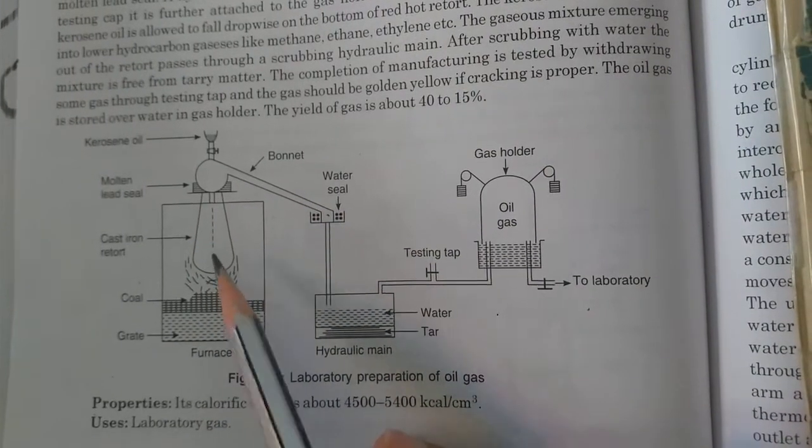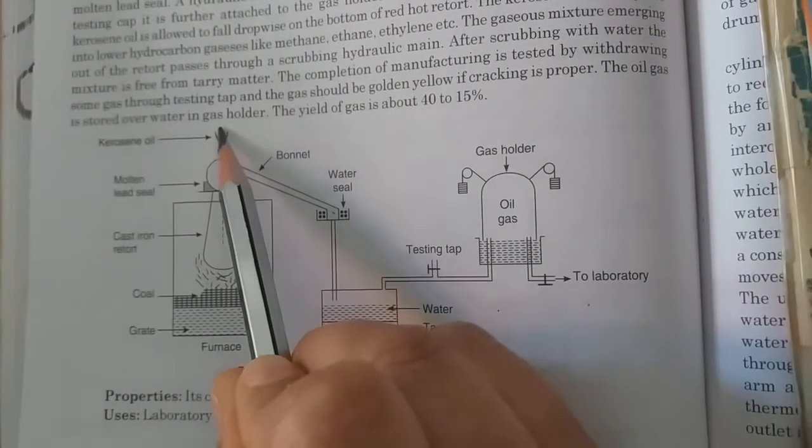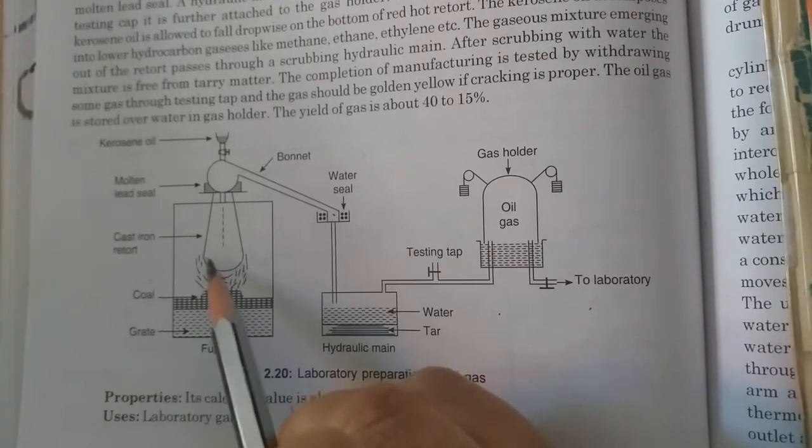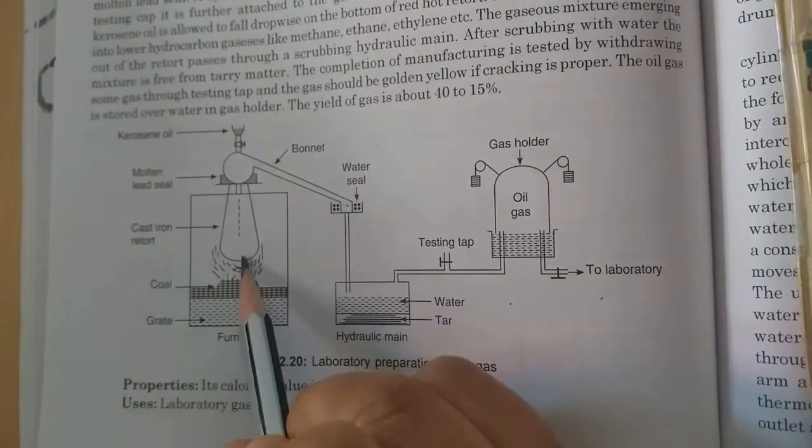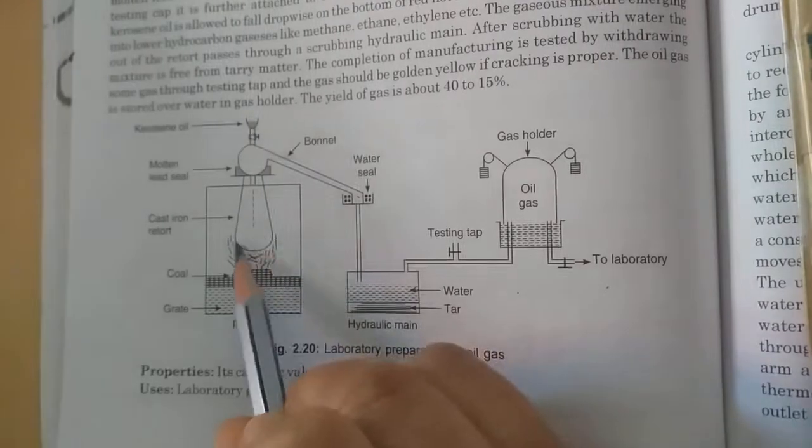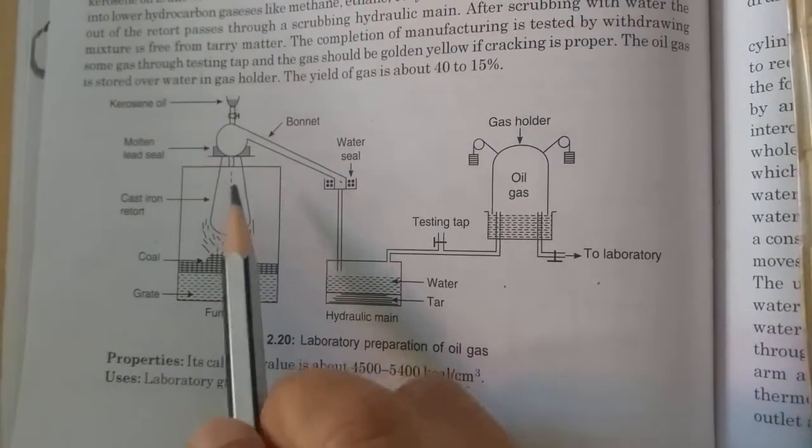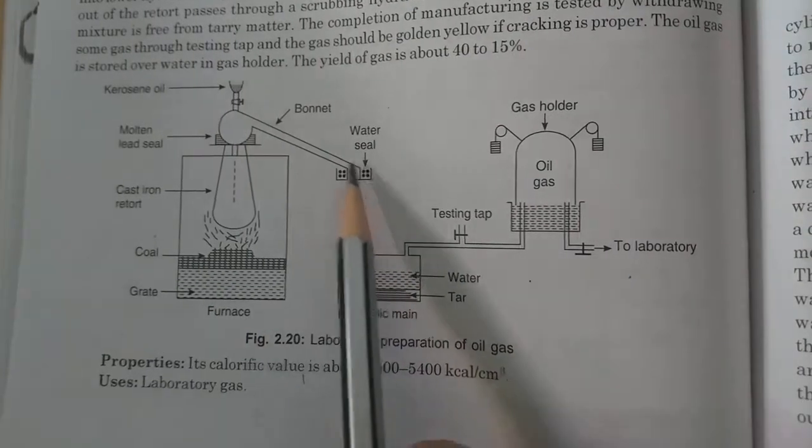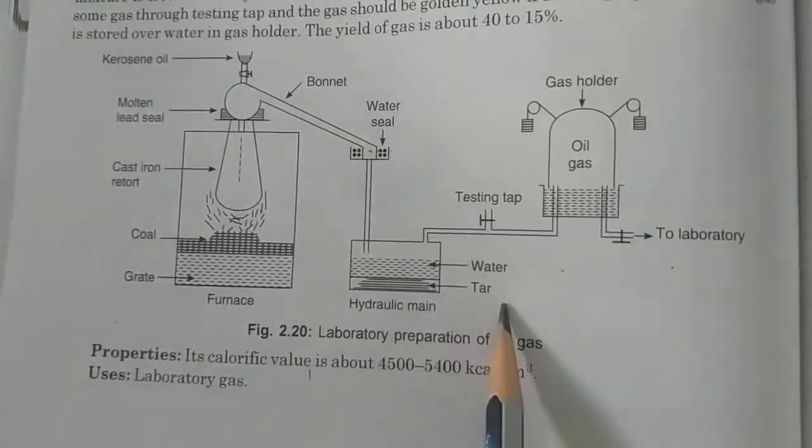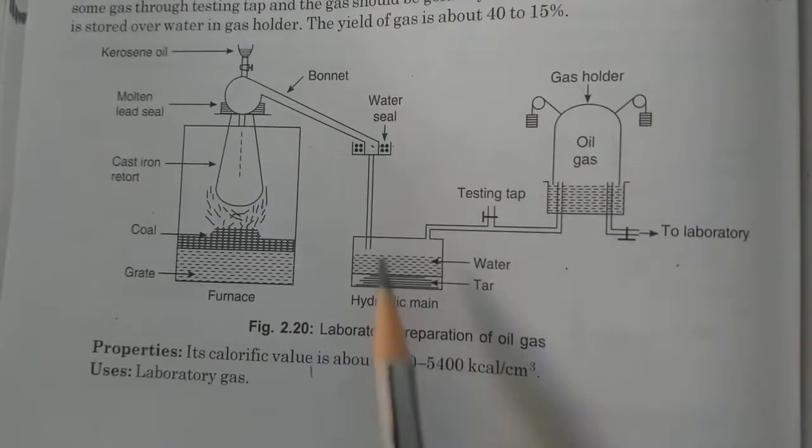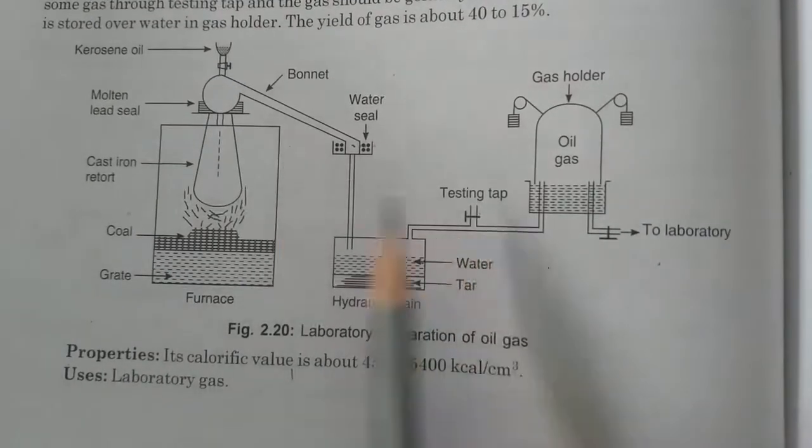This is the figure which shows the manufacturing of oil gas. This is the iron retort, cast iron retort. When it is red hot, kerosene oil drops from the thistle funnel. When kerosene oil drops on the red hot cast iron retort, thermal cracking occurs. After thermal cracking, a mixture of lower hydrocarbons is produced, which is passed through hydraulic main with water seal. Because of this, water and tar present in the gas are removed.